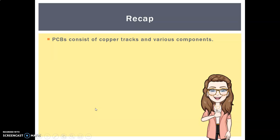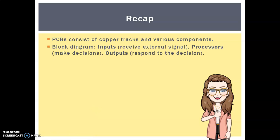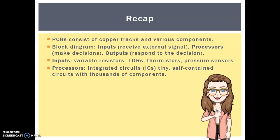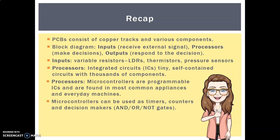In summary: PCBs consist of copper tracks and components. We can use block diagrams of inputs, processes, and outputs. Input devices include variable resistors, LDRs, thermistors, and pressure sensors. Process devices include integrated circuits and microprocessors, which can be used as timers, counters, and decision makers. Outputs include LEDs and buzzers. Well done everyone — see you in class.